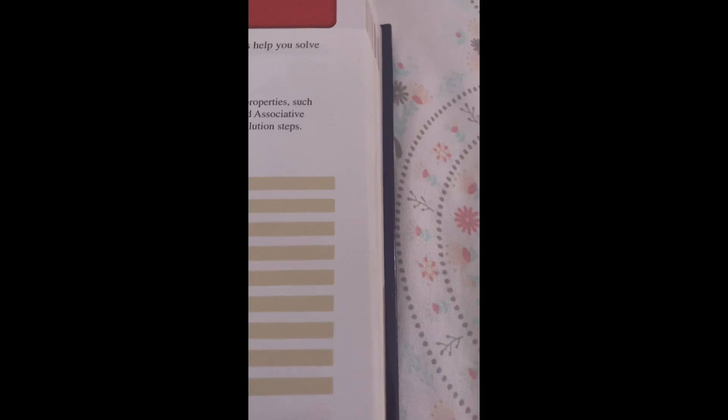2.4 Algebraic Reasoning. Looking for Structure: To be proficient in math, you need to look closely to discern a pattern or structure. Remember: inverse operations undo each other. Addition and subtraction are both inverse operations. Multiplication and division are inverse operations.